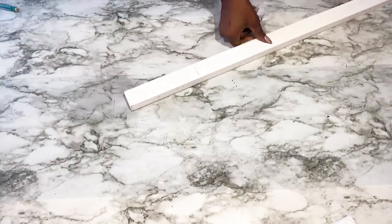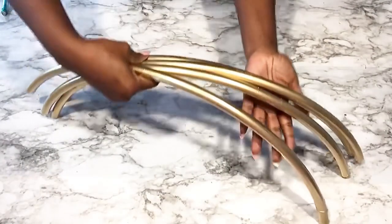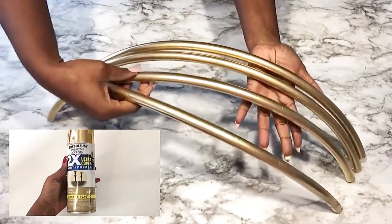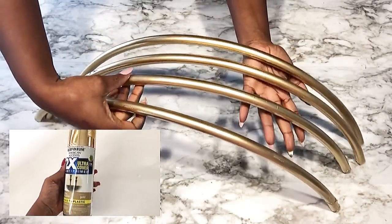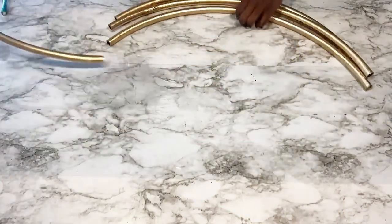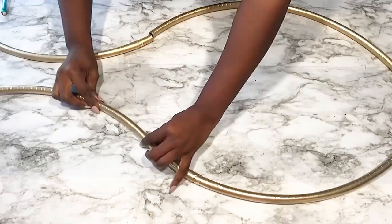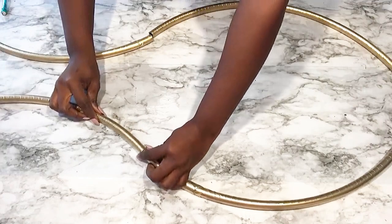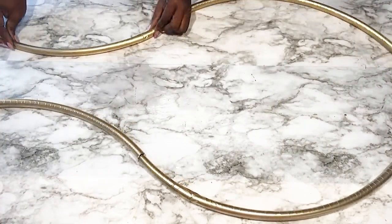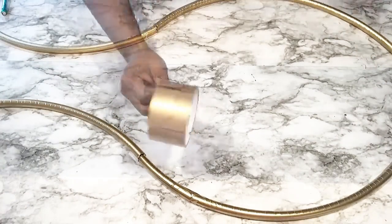I took the hoops that I had cut and spray-painted them all gold. I'm now going to attach them together using duct tape.